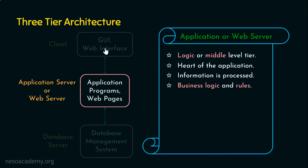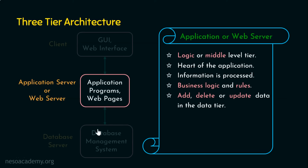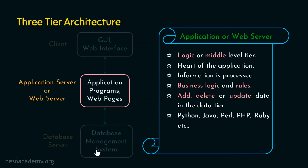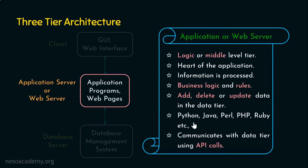The presentation tier handles collection and display of data, but logic is applied at the application tier. If the logic involves addition, deletion, or update of data, those operations are performed in the data tier where data is physically stored. This tier directly interacts with the bottom-most physical tier — the database server. The communication between the application tier and data tier is through API calls, the application programming interface calls. Technologies used here include Python, Java, Perl, PHP, Ruby, etc.